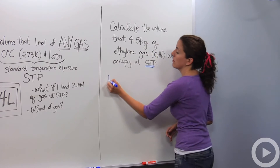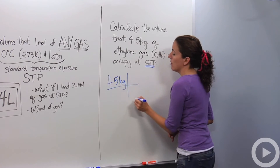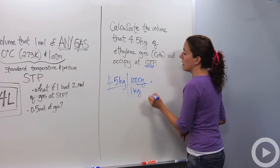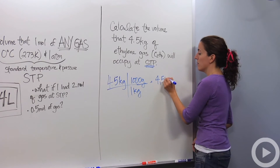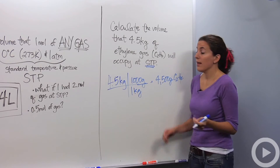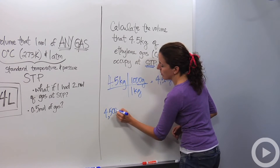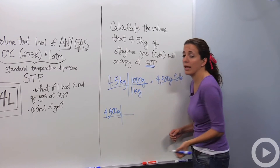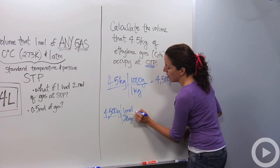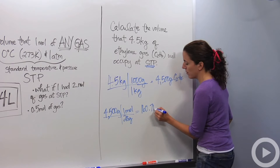We have 4.5 kilograms. We want to change that to grams because we don't work with kilograms here. One kilogram is equal to 1,000 grams, so we have 4,500 grams of ethylene. Now let's change these grams to moles. The molar mass of ethylene is 28 grams per mole. So 4,500 grams divided by 28 grams per mole gives us 160.71 moles of C2H4.